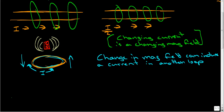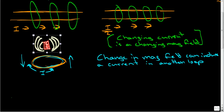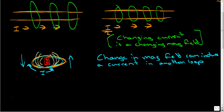If we just took this magnet and stuck it here and didn't move it at all, we're not going to get that induced current. It has to be a change in the magnetic field — that's the key thing. We can't just have a magnet sitting there; otherwise we'd have free energy, just a bunch of magnets sitting in generators. We could play Xbox with those.